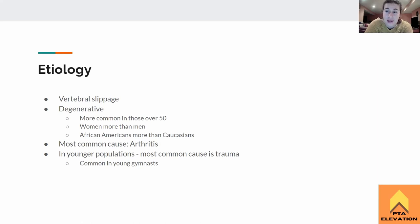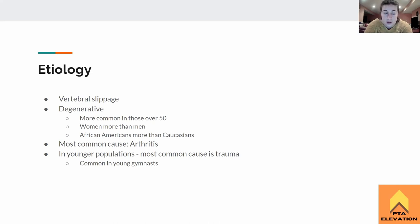What we're more likely to see in the clinic and on the boards is degenerative spondylolisthesis. That's more common in people over 50 years old, women more than men, and African-Americans are more likely to develop spondylolisthesis than their Caucasian counterparts. It's degenerative, usually due to arthritis as the main cause, which leads to more osteophyte formation and causes the vertebrae to start sliding forward.